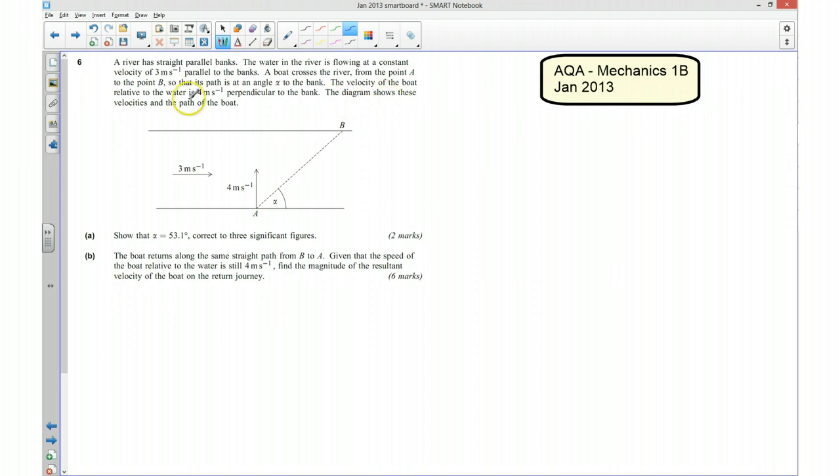And the diagram shows us all of these velocities. So part A is asking us to show that alpha is equal to 53.1 degrees.